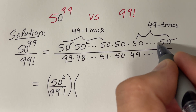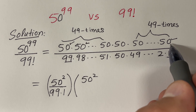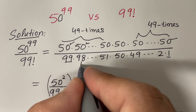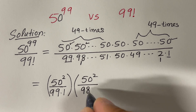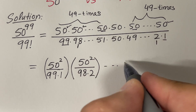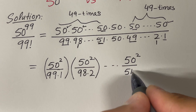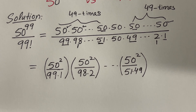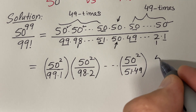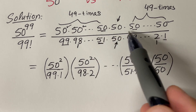The second group is 50 squared divided by 98 times 2. We continue like this — since the numerator has exactly 49 pairs and the denominator has exactly 49 corresponding pairs, for each factor above 50 there is exactly one factor below 50. We continue until we reach 50 squared divided by 51 times 49. Then there is one extra factor in the numerator and one in the denominator, which gives 50 divided by 50.